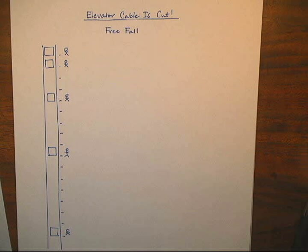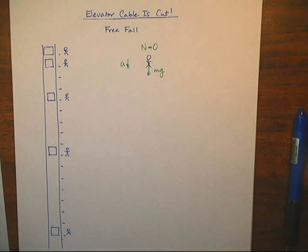If the elevator cable is cut, both you and the elevator fall toward the Earth with an acceleration of 9.8 meters per second squared. You feel weightless because you sense no pressure on your feet. The normal force on you is zero.